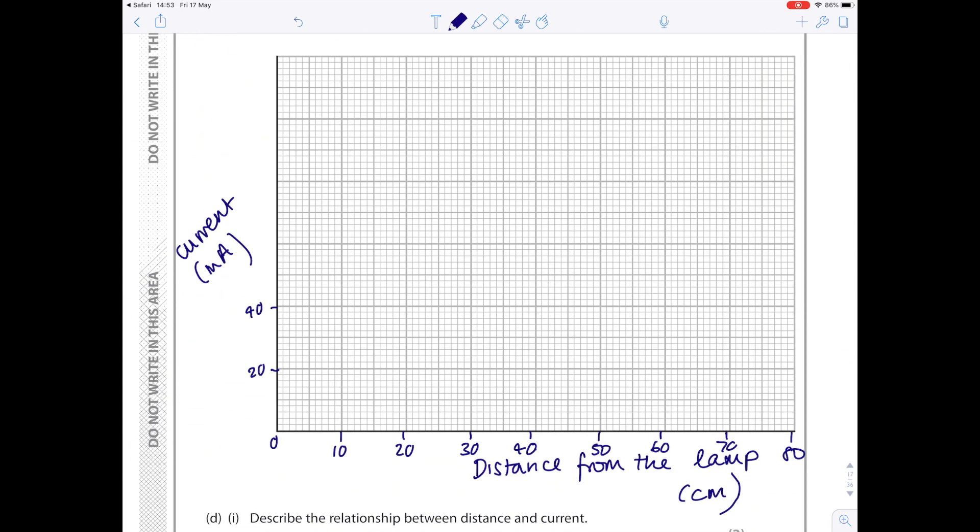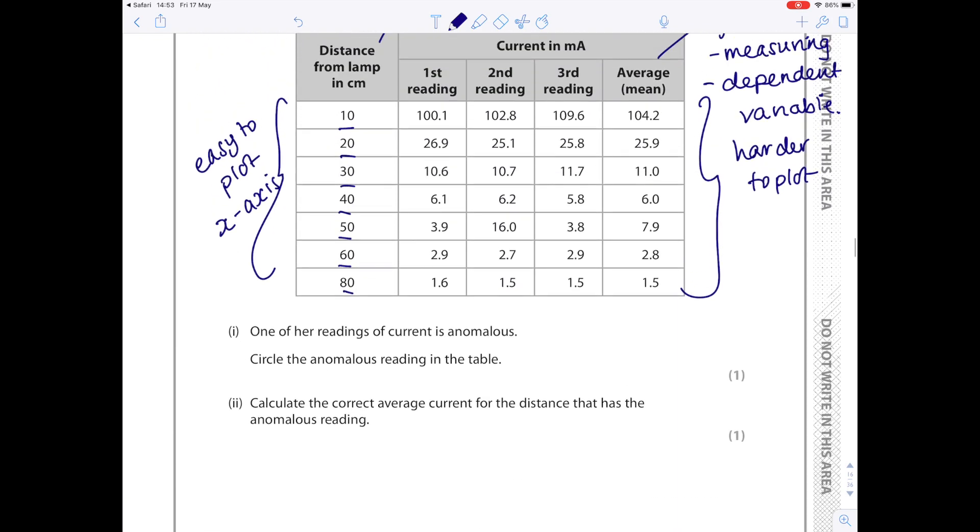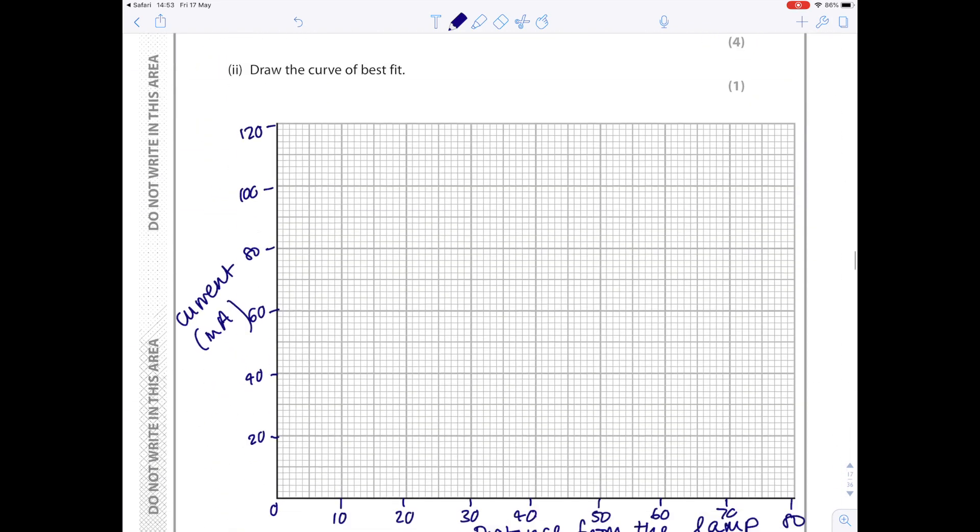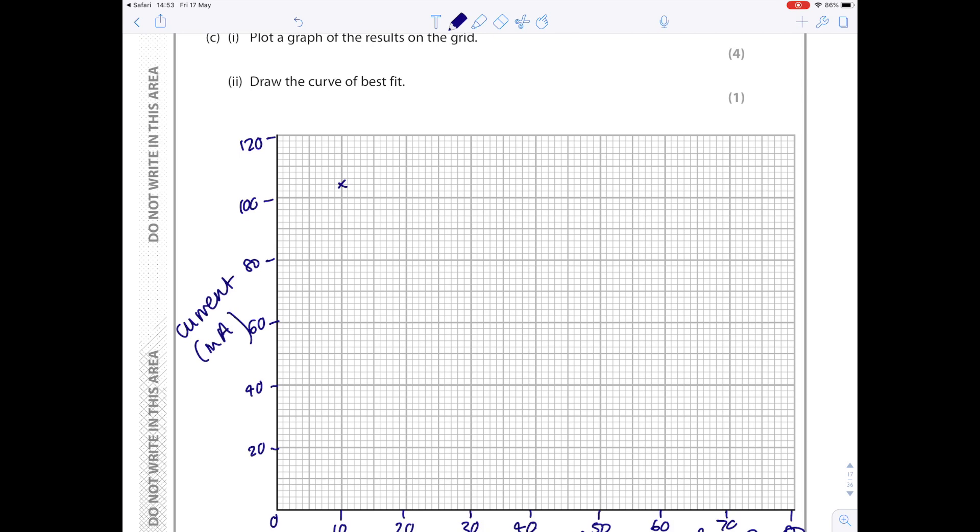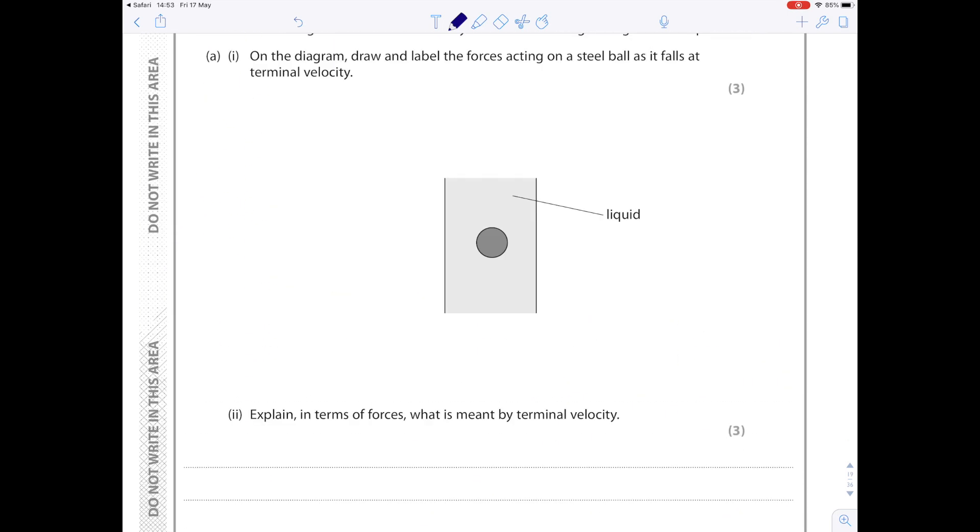So 20, 40, 60, 80, 100, 120, and now we're ready to plot. So 10 needs to go at 104.2, so that's around here. Right, I'm not going to plot the whole thing. This isn't what this video is about, but notice that it says draw a curve of best fit, so you're not drawing dot to dot. You need to draw that freehand.